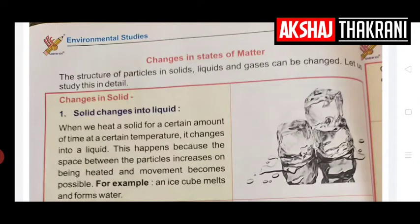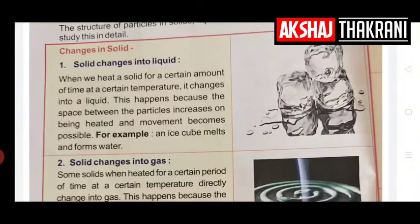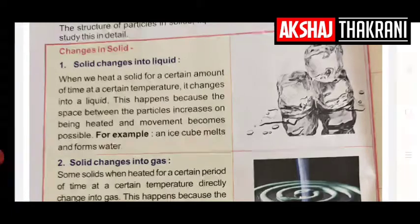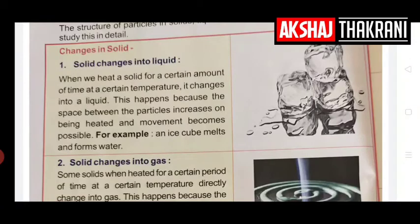Changes in solid: A solid changes into liquid — this is called melting. When we heat a solid, the space between particles increases so they can move more easily. For example, an ice cube melts and forms water. The ice cube is solid, but when kept at room temperature, it absorbs heat and melts.